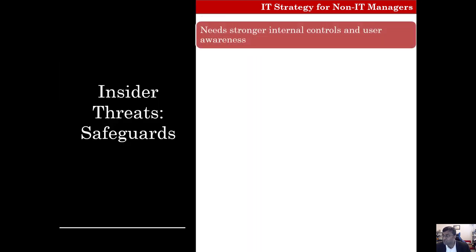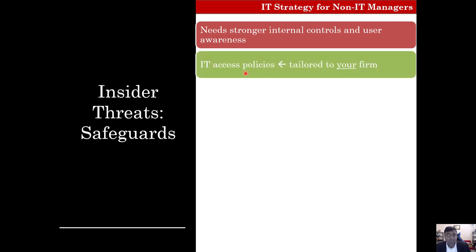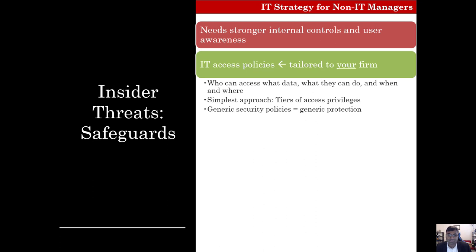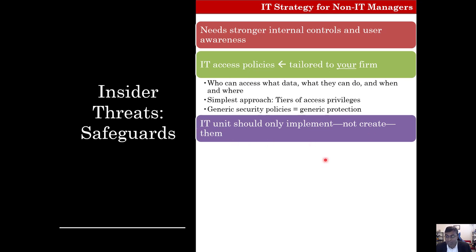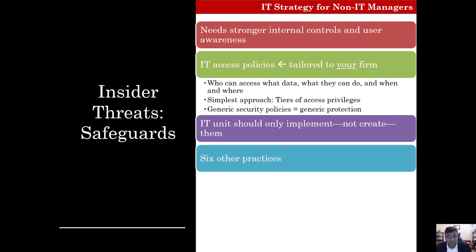Some safeguards include the need for internal controls and user awareness. IT access policies should be tailored to your firm — this especially helps with the insider threat by establishing proper access policies: who gets to access what parts of your systems? There is no reason for your refrigeration vendor to have access to your customer credit card data. It is important to have clear-cut access policies, and IT units should only implement them, not create them — that must come from line managers.